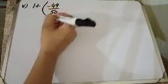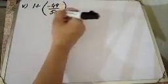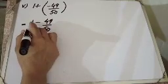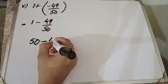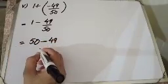पांचवां part है इसी का: 1 plus minus 49 over 50. Solution में हम लिखेंगे: plus minus minus 49 over 50. 50 को 1 से multiply करेंगे, तो 50 minus 49 आएगा। Denominator यही रहेगा 50, तो answer आजाएगा 1 over 50.